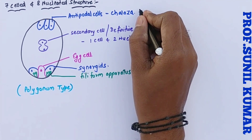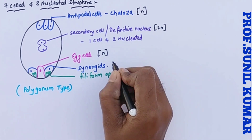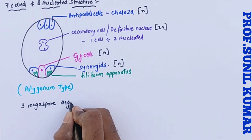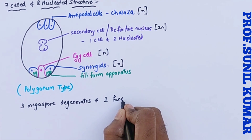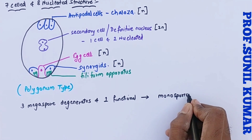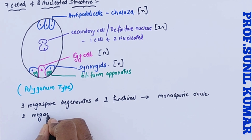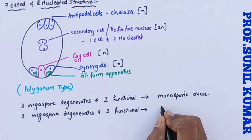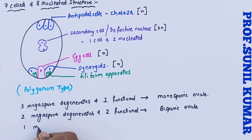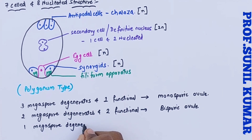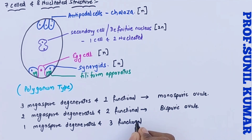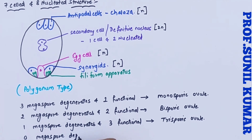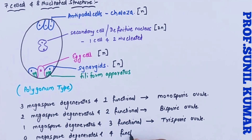Out of the four mega spores in the tetrad, if three degenerate and one forms the functional mega spore, that type of ovule is called a monosporic ovule. In some angiosperms, two mega spores degenerate and two become functional — these are called bisporic ovules. In others, one mega spore degenerates and three form the functional mega spore — called trisporic ovule. And in some angiosperms, none of the mega spores degenerates and all four are functional, giving a tetrasporic ovule.